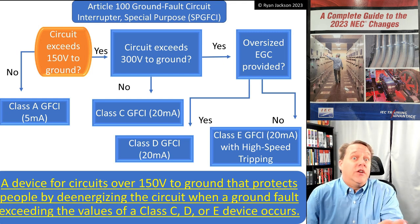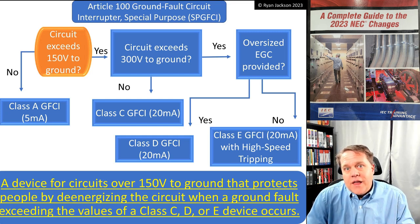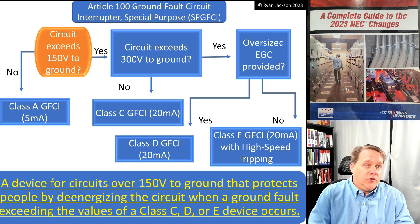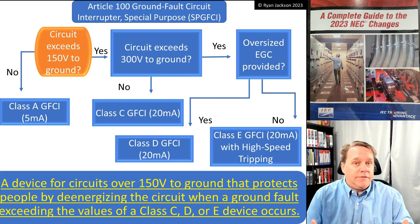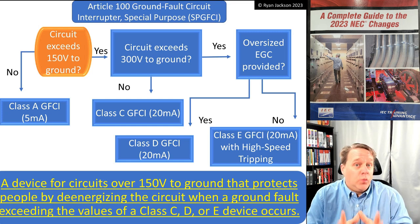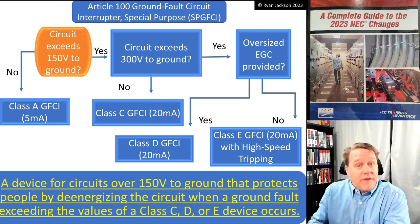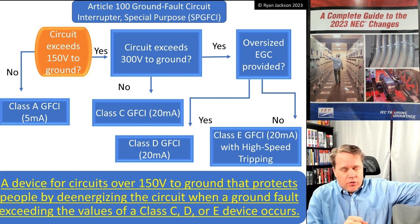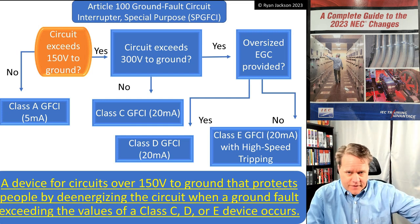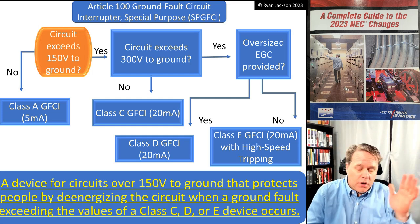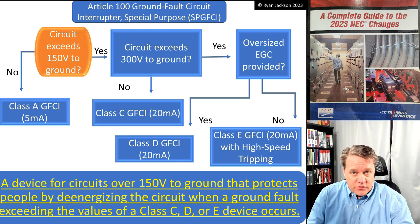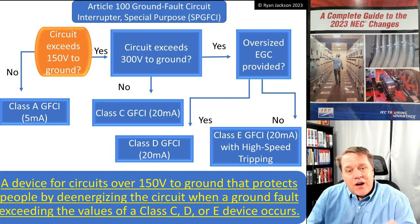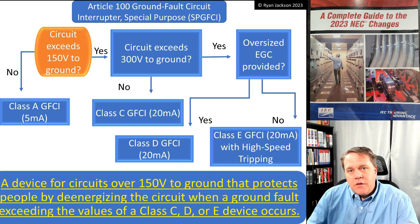Class A GFCI devices have been around since their invention back in 1968. There was also a Class B GFCI device, but that was only for underwater swimming pool luminaires and was only around for about three years — just long enough to prove the concept that GFCIs could prevent fatal electric shocks. Class B has not been around for over 50 years. Class A is all we've been using for 50 years — until now, with the introduction of Class C, D, and E ground fault circuit interrupters.